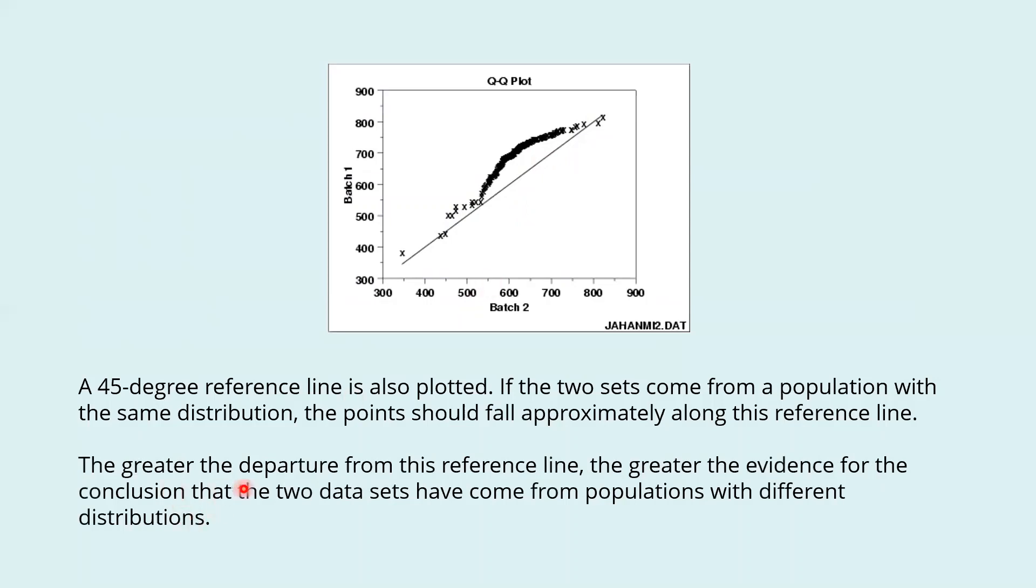The greater the departure from the reference line, the greater the evidence for the conclusion that the two data sets have come from populations with different distributions.